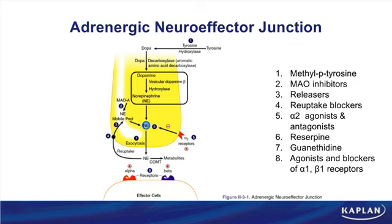Rapid reuptake into the presynaptic nerve is why norepinephrine has a short half-life — distinguishing it from acetylcholine, which has a short half-life due to metabolism by acetylcholinesterase. So we've reviewed three fates: NE binding to postsynaptic receptors, NE being metabolized by COMT, and rapid reuptake into presynaptic nerves.